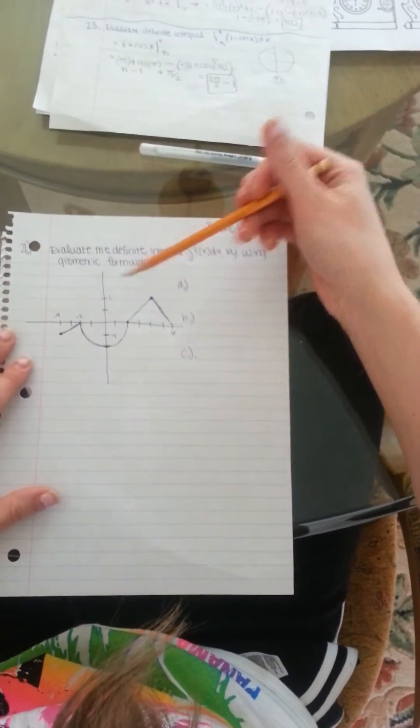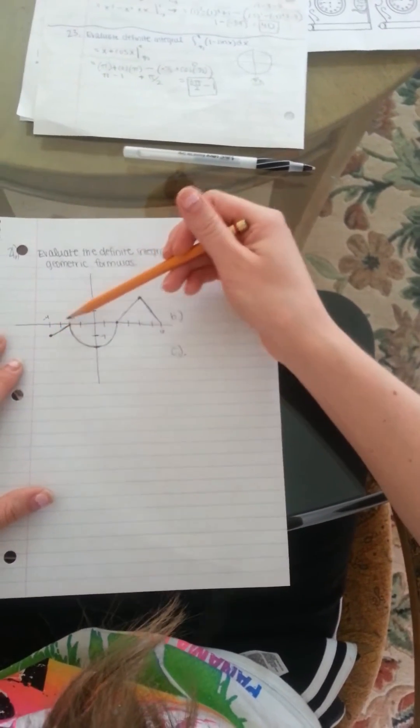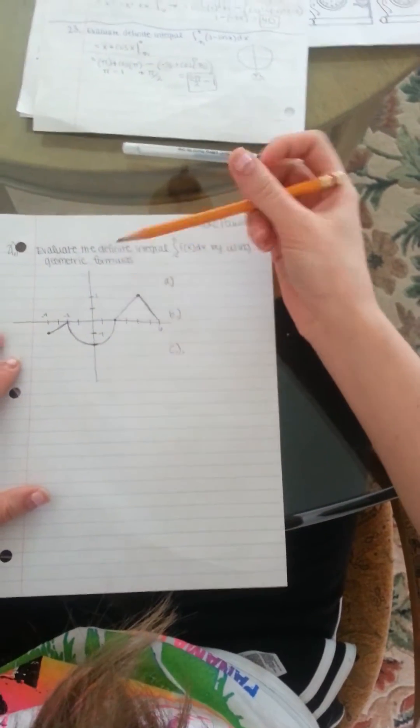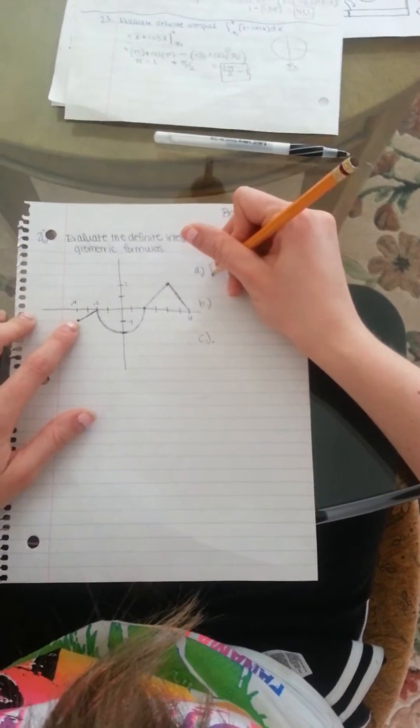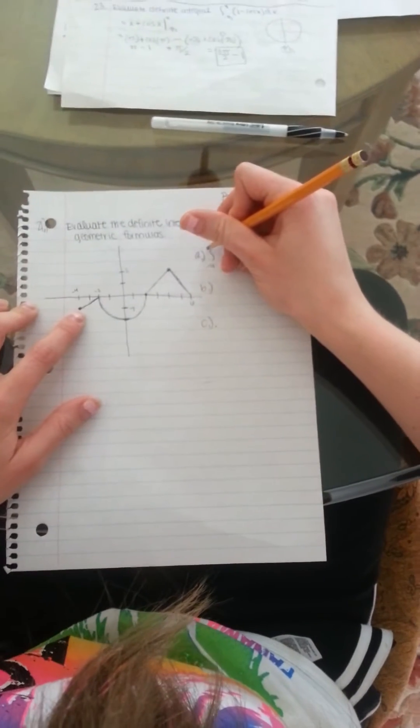So what I'm going to do is split up the integral so I can find the area of these geometric shapes and then just add them together at the end. So for the first integral is from negative 4 to negative 2.